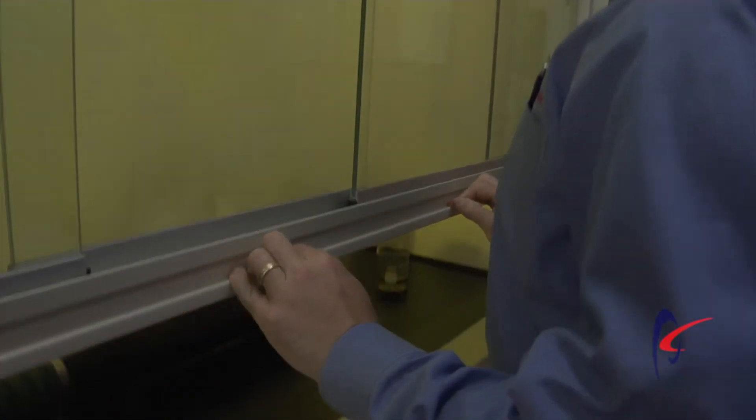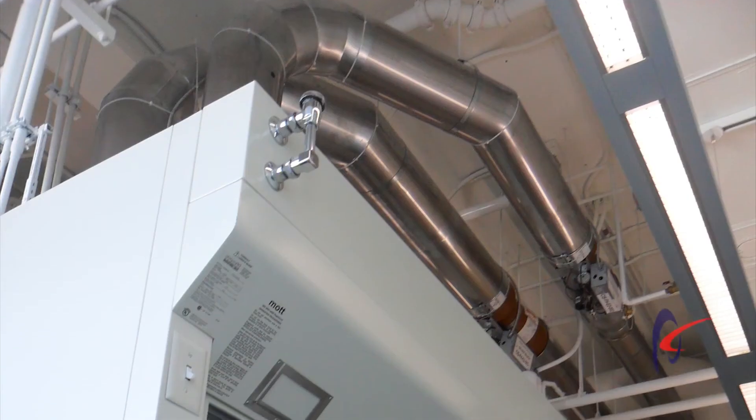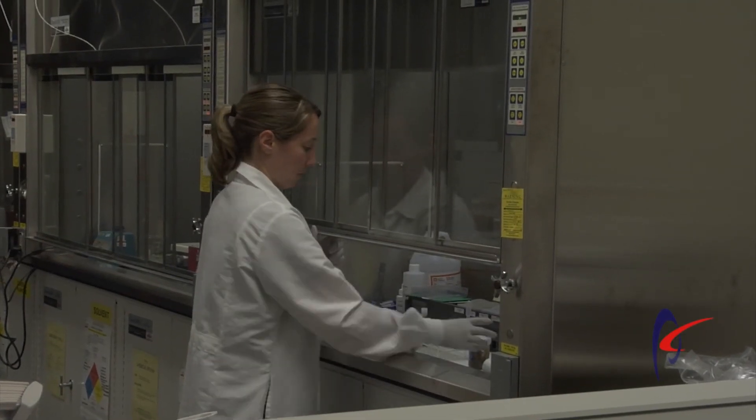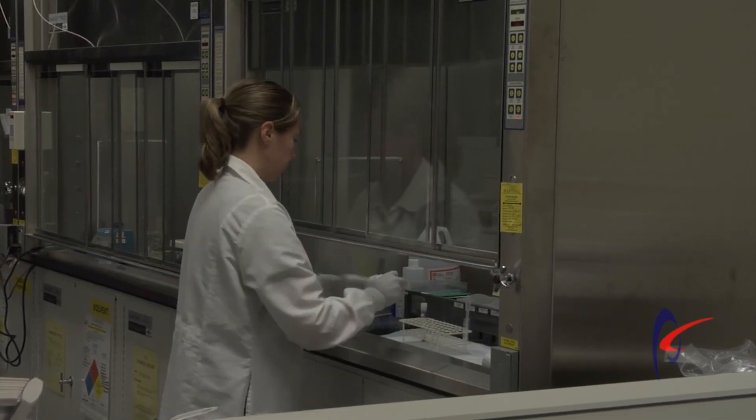So first off, we're variable volume, and by variable air volume, I mean we close that sash, we reduce the airflow. If the open area is smaller, the airflow required to maintain that constant velocity through that opening becomes smaller itself. Otherwise, the velocity will change. So by reducing the airflow, we're reducing the energy consumption and maintaining safety.